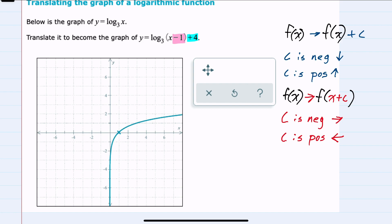So our translation here is up 4 units. For example, this point here of (1, 0) gets shifted up to (1, 4).